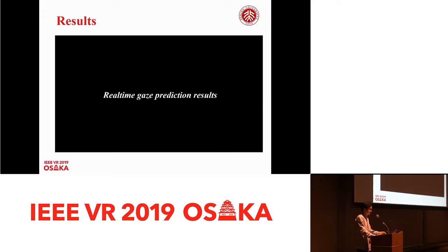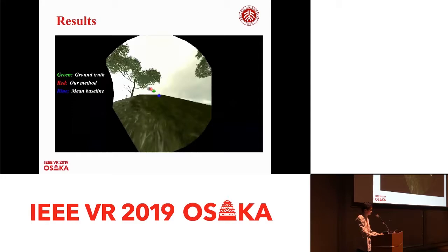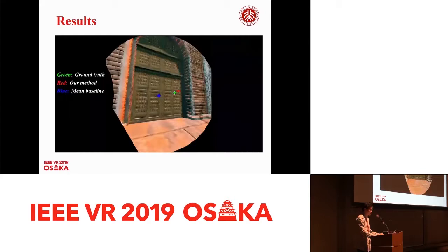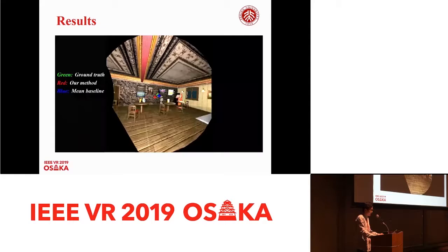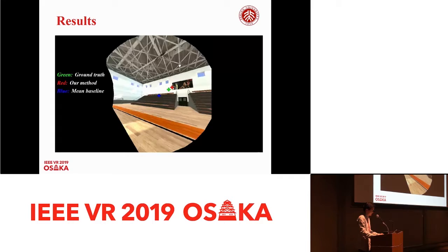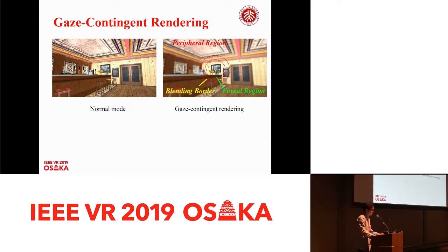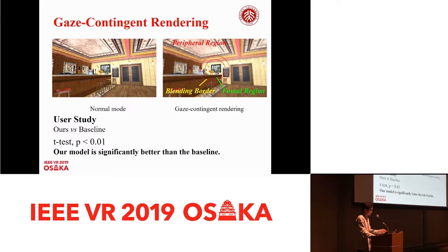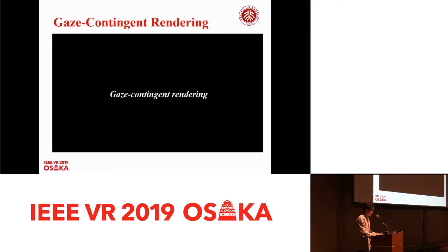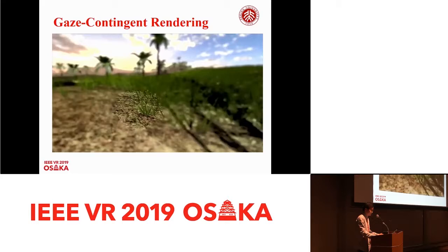This video shows our real-time gaze prediction results. The green cross refers to the ground truth, the red one refers to our method, and the blue one refers to the mean baseline. Our model outperforms the baseline in most of the time. We also apply our model to gaze-contingent rendering, a technique that decreases rendering quality in the peripheral region while maintaining high quality in the foveal region. A user study confirms the effectiveness of our model, showing it is significantly better than the baseline for gaze-contingent rendering.